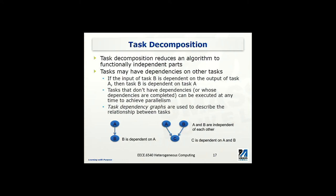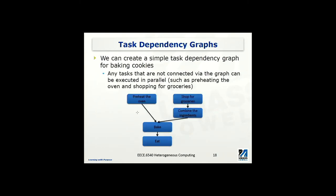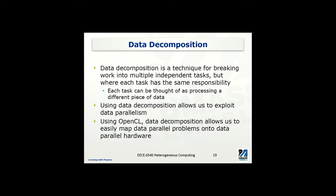Task dependency graphs are very useful in describing the dependency relationships between tasks. In a simple example on the left, B is dependent on A. In the figure on the right, C is dependent on both A and B, but A and B themselves are independent — neither has to wait for data from the other. These dependencies can form a larger graph that helps you understand which operations can be performed in parallel and which cannot.